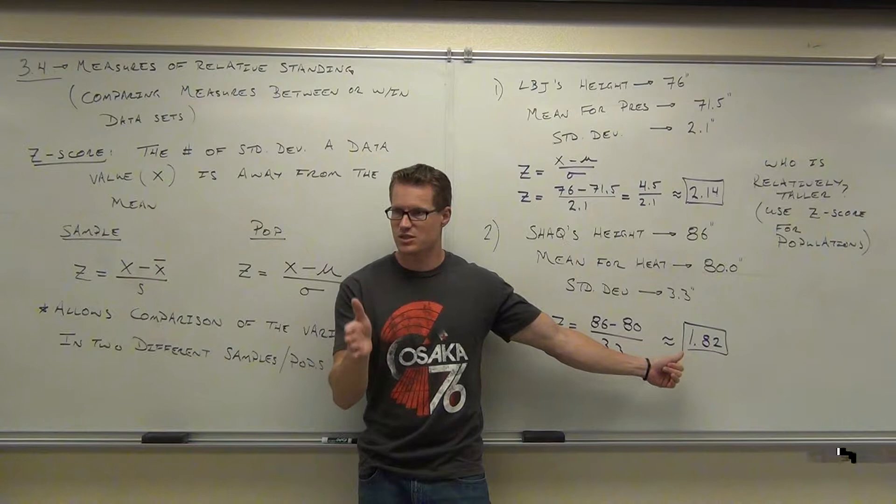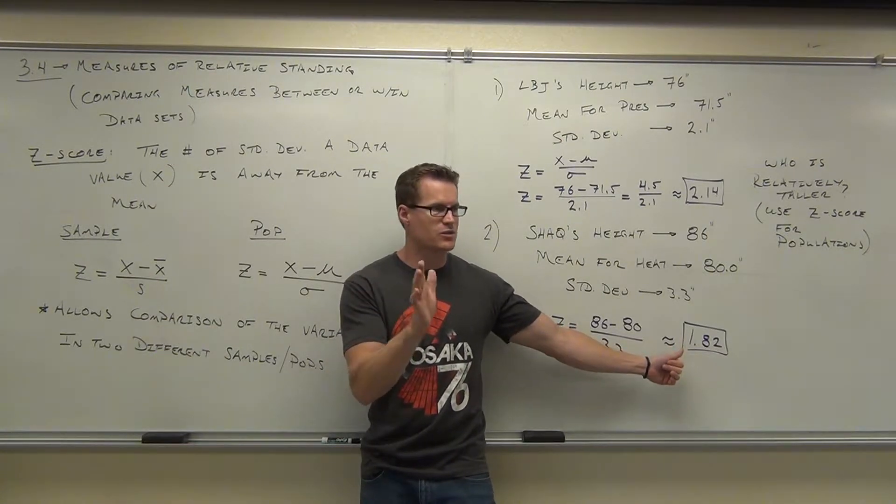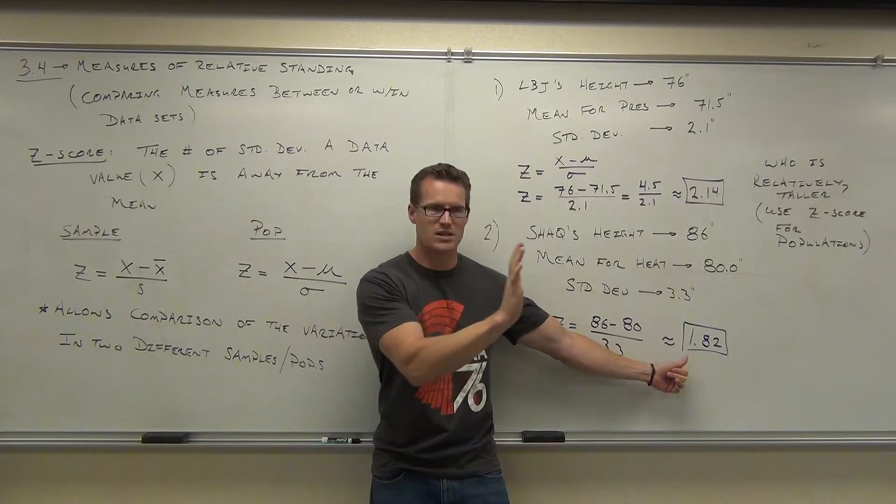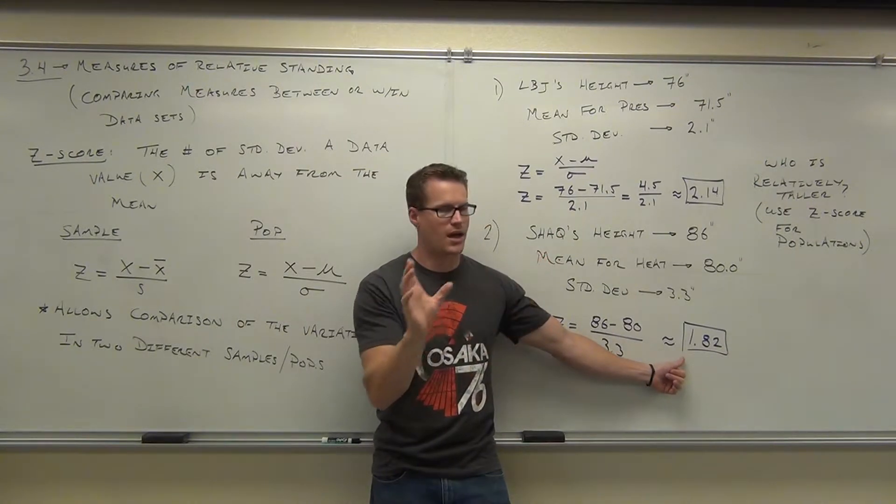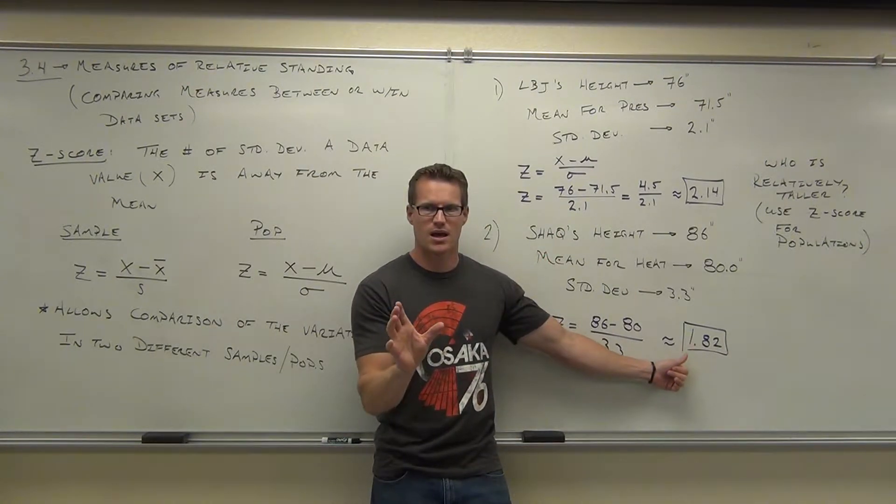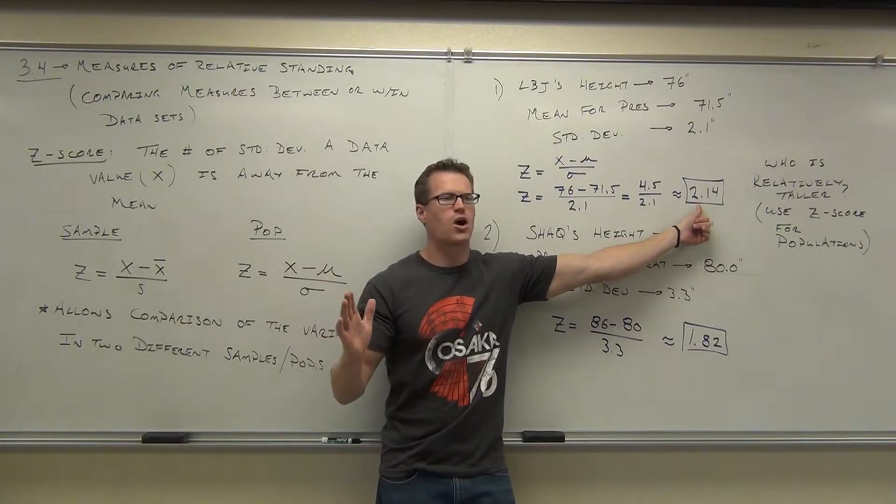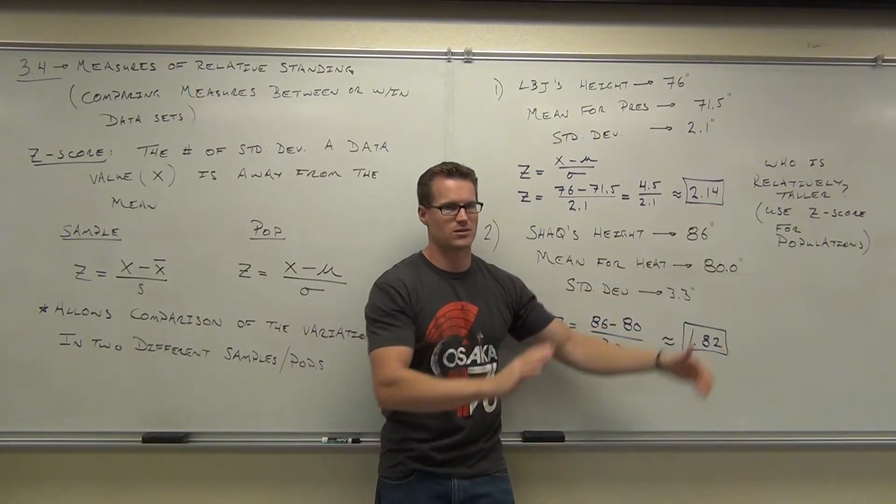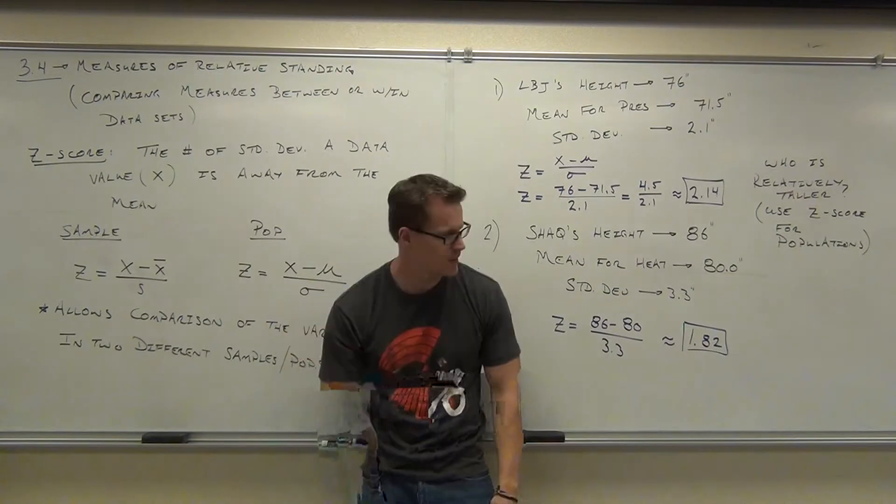So he's only 1.82 standard deviations away from mean. He's taller than them, right, because it's positive. I hope you're catching this. I'm saying a lot of important things here. It's positive, which means he was taller than most of them, right, the average. So his positive Z score means you were taller than. But he wasn't as much taller than his players as LBJ was than his presidents.